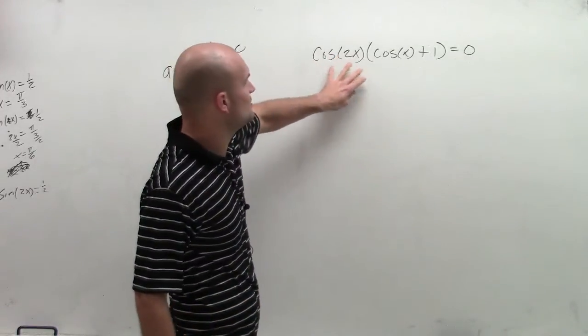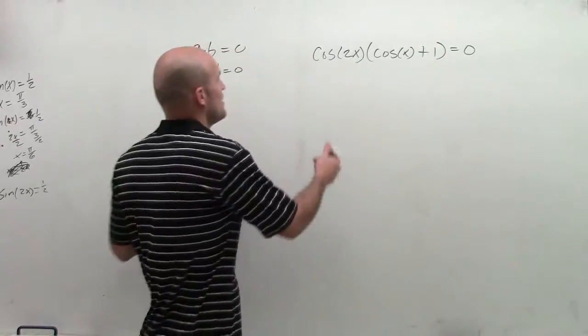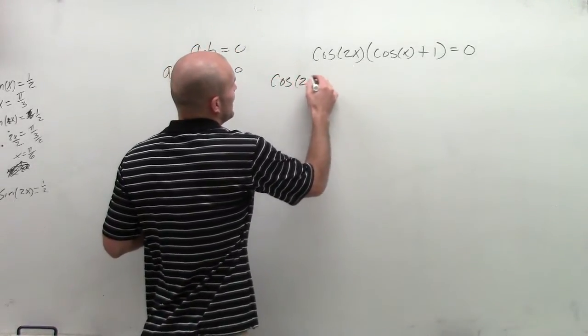So since I have cosine of 2x times cosine of x plus 1 equals 0, I know that one of them has to equal 0. So what I'm going to do is I'm going to write that out.